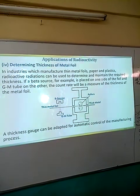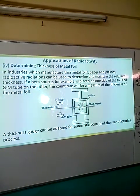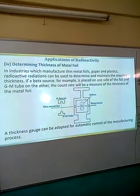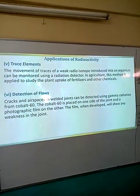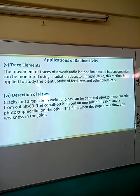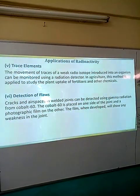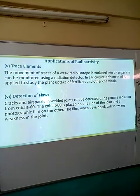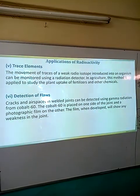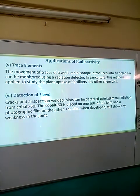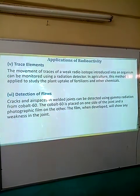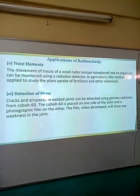A thickness gauge in this case can be used to automatically control the manufacturing process in the production of the metal foil. Another application is in trace elements. This is normally applicable in agriculture, where fertilizers and other chemicals are absorbed by the plants. When these chemicals and fertilizers are mixed with some radioactive elements, they can easily be traced as they are being absorbed by the plants from the roots upwards up to the leaves.